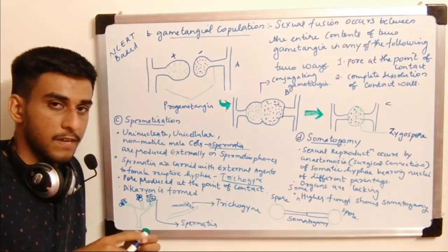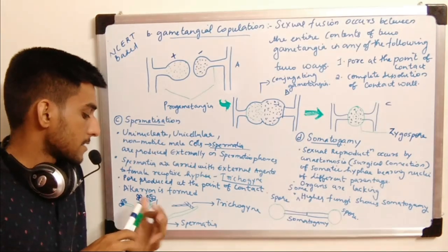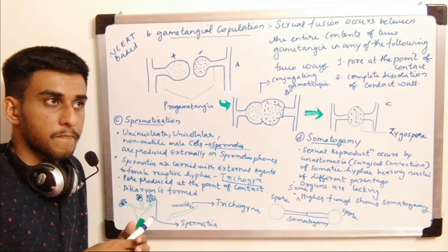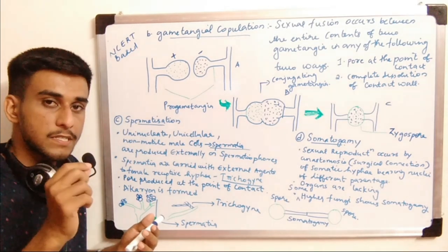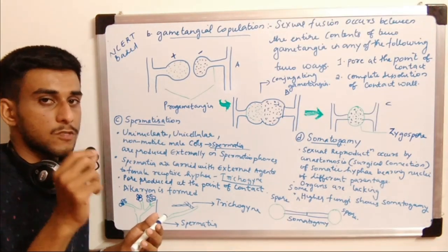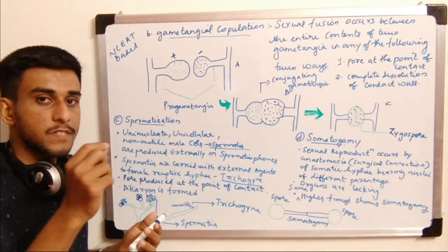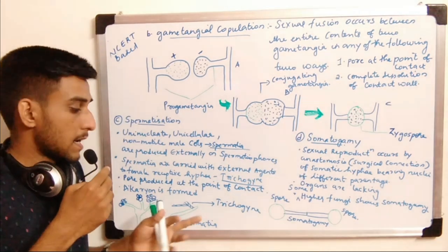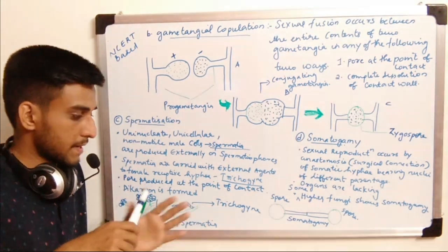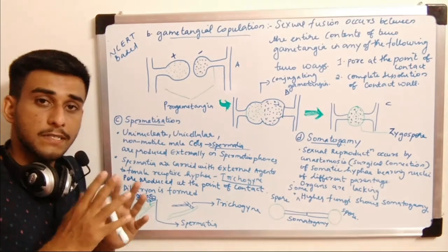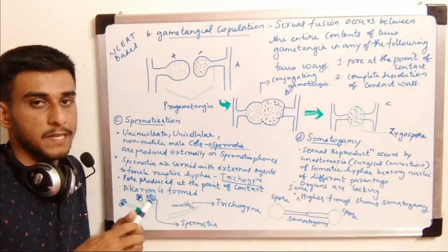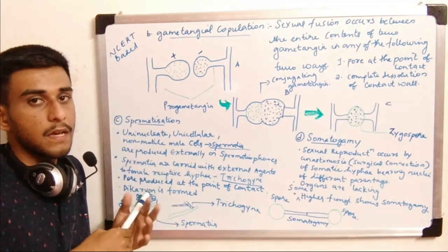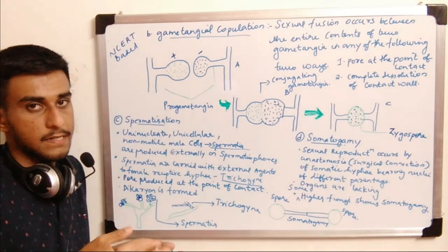The spermatophore bears a group of spermatia. The spermatia at a particular point of time are released. The structure that receives the spermatia is known as the trichogyne — the female receptive hyphae which accepts the spermatia. After acceptance, plasmogamy, karyogamy, and meiosis occur.